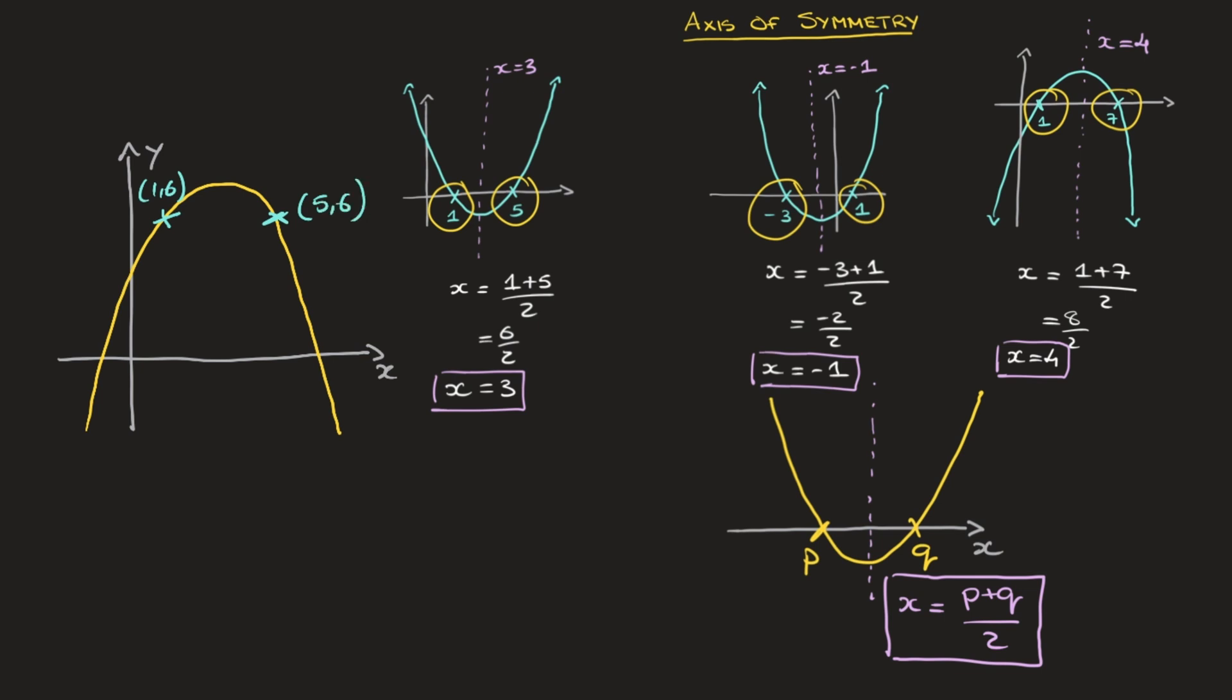What's important to notice is that both of these points have the same y-coordinate. Consequently, they both lie on the horizontal line y = 6. Provided we have two points on a parabola with the same y-coordinate, we can calculate the equation of the axis of symmetry by calculating the average of the two x-coordinates. In this case, the average of 1 and 5.